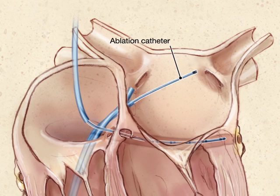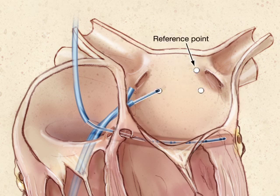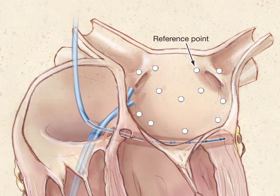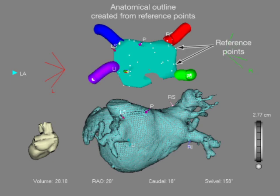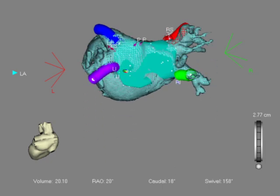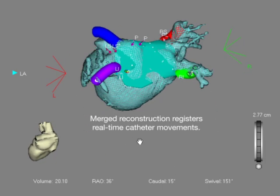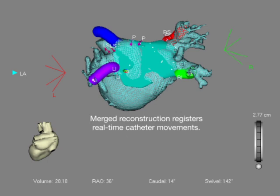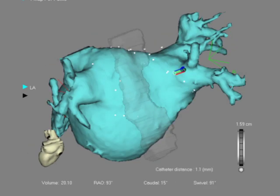An ablation catheter is introduced and used to tag a series of anatomical reference points on the posterior left atrium and the pulmonary veins proper. These points together create a basic anatomical outline that is then used to register the true anatomical position of the catheter within the three-dimensional reconstruction generated from the patient's CT data. An assistant at the computer workstation integrates this basic outline with the three-dimensional reconstruction, subsequently allowing the operator to navigate inside a virtual shell of the patient's left atrium.